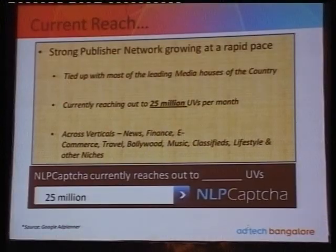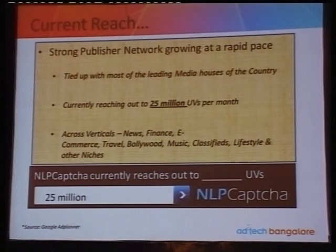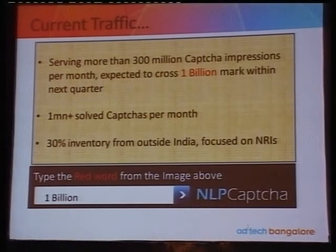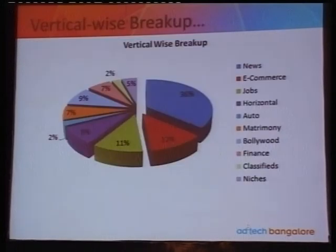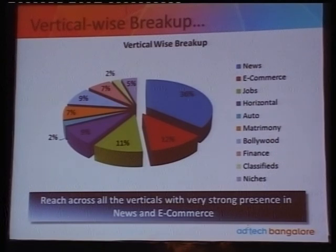Coming on to our current status: we have tied up with almost all the leading publishers in the country — whether it's Indian Express, The Hindu, or Chronicle. We're reaching around 25 million unique browsers per month across verticals including news, finance, e-commerce, travel, and Bollywood. We are serving more than 300 million CAPTCHAs per month and target to cross the billion mark very soon. Of those, one million is the number of sold CAPTCHAs per month, and 30% of our inventory is from outside India. We have strong presence across all verticals, with especially strong performance in news and e-commerce.